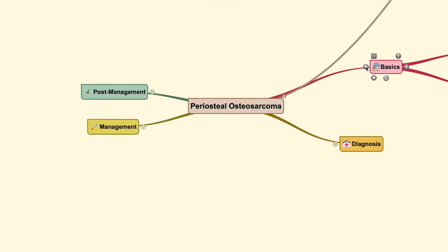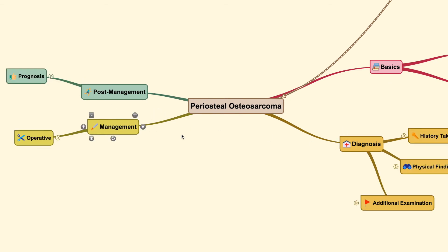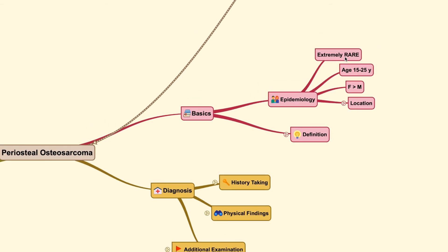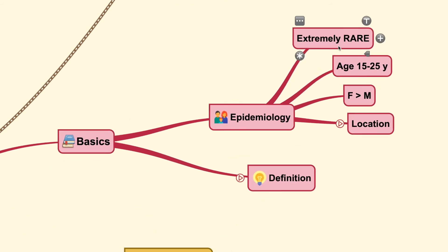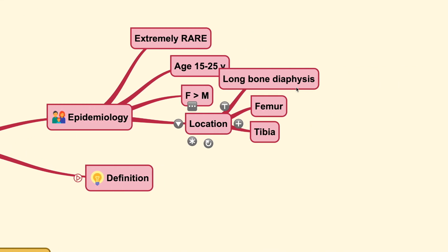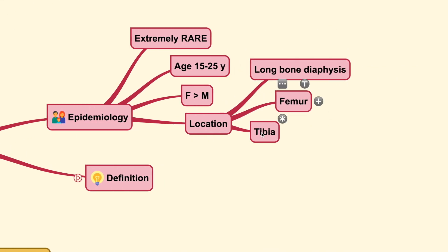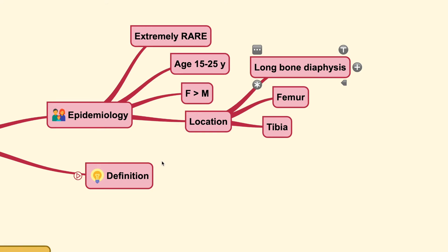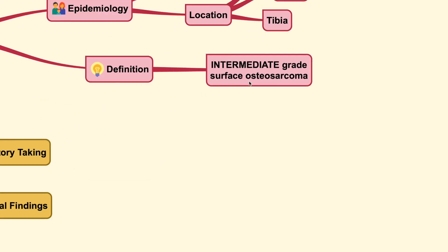That concludes parosteal osteosarcoma; now we move on to periosteal osteosarcoma. For the periosteal type, you can find it at a young age — still at a young age but rather at the 3rd or 4th decade — and it is considered extremely rare. The location of the lesion is not typically at the metaphysis; it is usually found in the long bone diaphysis of the femur and tibia, making it quite different from intramedullary osteosarcoma. It is considered an intermediate-grade osteosarcoma and a surface variant.